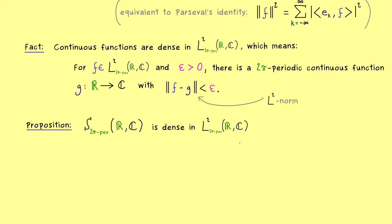This is exactly what we need for our approximation, because we have already proven Parseval's identity for step functions. As a reminder, a step function looks more or less like a decomposition of our interval into finitely many sub-intervals, and on each interval the step function is constant. Since we talk about integrals, it does not matter what the step function does on the boundary points, because finitely many points will not change the integral.